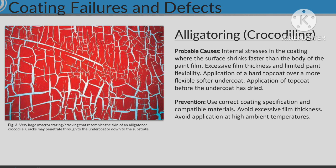Alligatoring / Crocodiling. Probable causes: internal stresses in the coating where the surface shrinks faster than the body of the paint film. Excessive film thickness and limited paint flexibility. Application of a hard top coat over a more flexible softer undercoat, or application of top coat before the undercoat has dried.